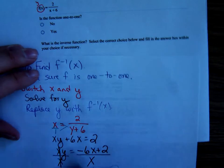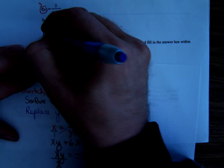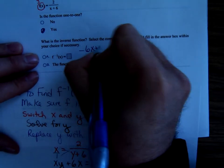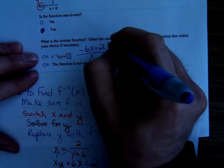So, on this problem, what does that mean? Is it one-to-one? Yes. What's its inverse? Negative 6x plus 2 all over x.